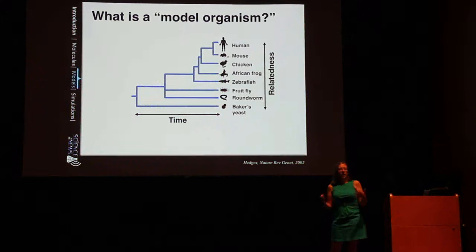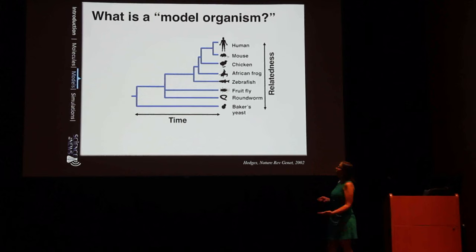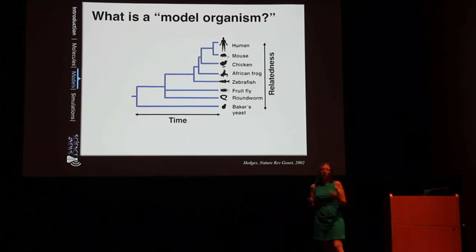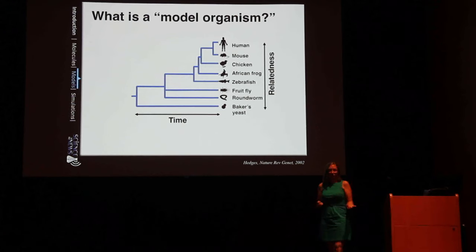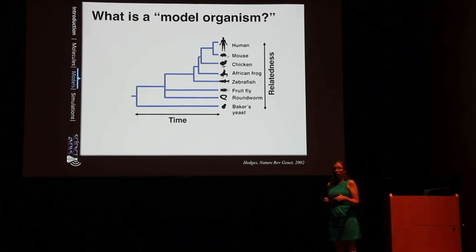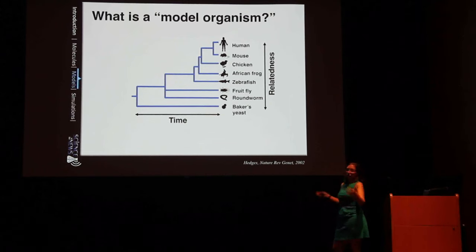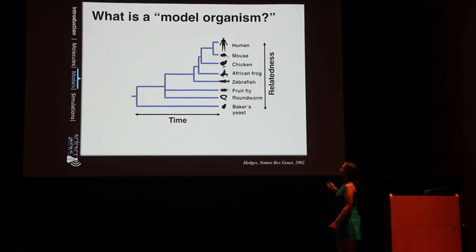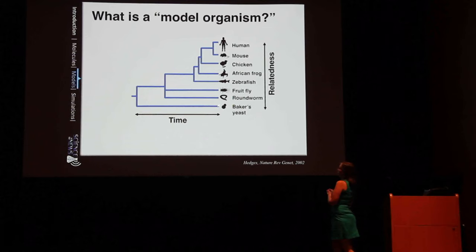You may first be wondering what a model organism is. A model organism is essentially a type of living creature that we study as biologists in order to understand something about the biology of our own bodies. This works because of the relatedness of different organisms. What you're looking at here is essentially a family tree of different organisms — we humans are more closely related to the mouse than we are to the roundworm or baker's yeast because our common ancestors are farther back on this tree.